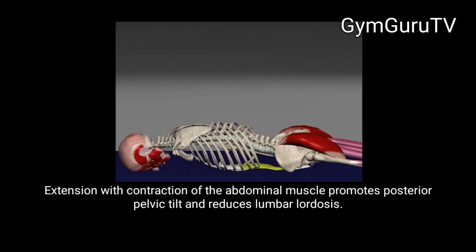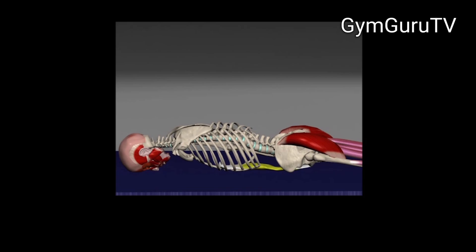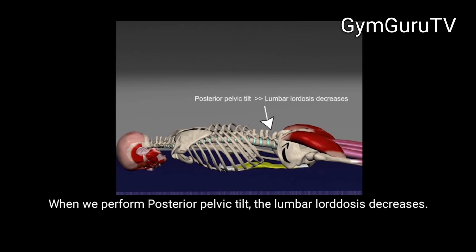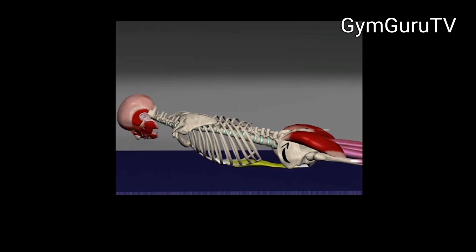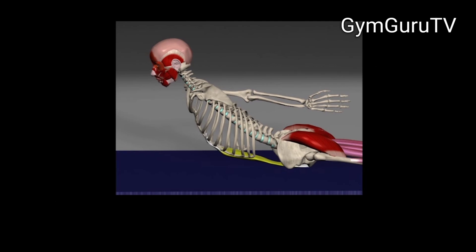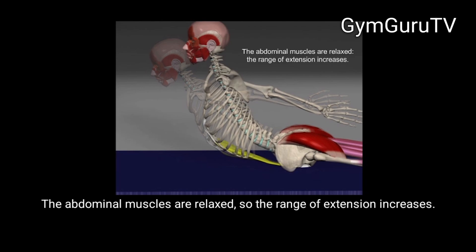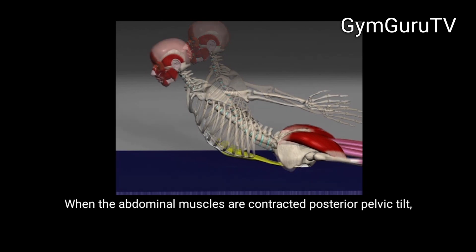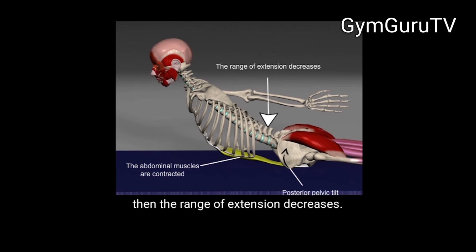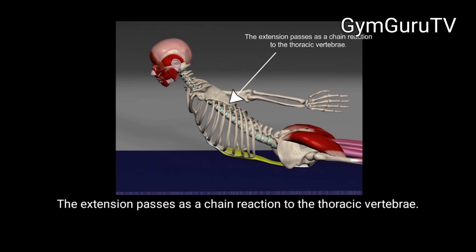Extension with contraction of the abdominal muscles promotes posterior pelvic tilt and reduces lumbar lordosis, resulting in a smaller range of extension. Conversely, when the abdominal muscles are relaxed, the range of extension increases; when contracted, posterior pelvic tilt occurs and the range of extension decreases. The extension passes as a chain reaction to the thoracic vertebrae.